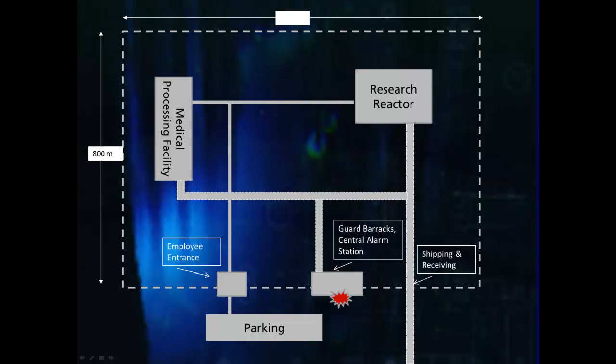This slide shows an example of a scenario that is crucial to consider and isn't captured by direct path analysis. The security design has a high system effectiveness value for all pathways into the facility. However, the building that houses both the central alarm station and the guard barracks is located on the perimeter of the facility. What happens if an adversary uses explosives to severely damage the building? The facility needs to test their guard force capabilities to ensure a direct attack on the barracks doesn't leave them vulnerable.